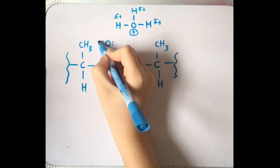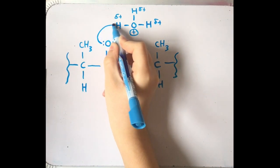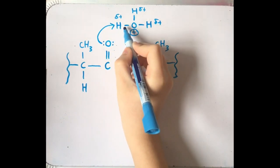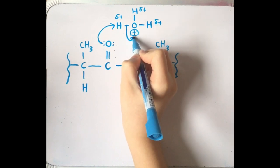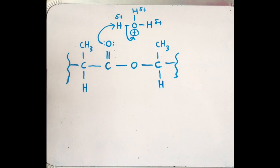In step one, the oxygen acts as a nucleophile and donates one of its lone pairs to the delta positive hydrogen in the hydronium ion. The OH bond in the hydronium ion donates its bonding pair to the oxygen, neutralizing the positive charge and forming water.